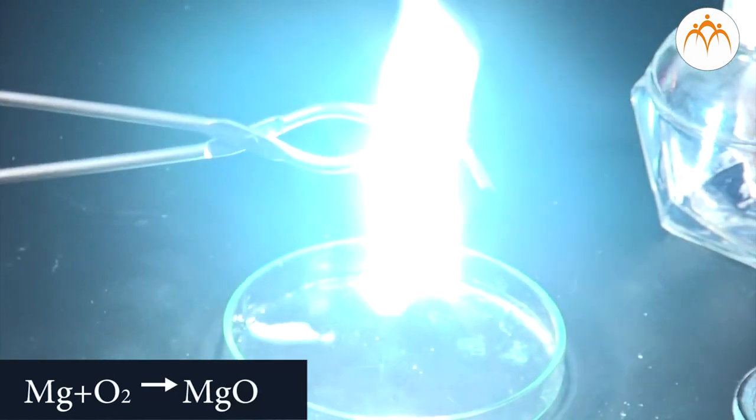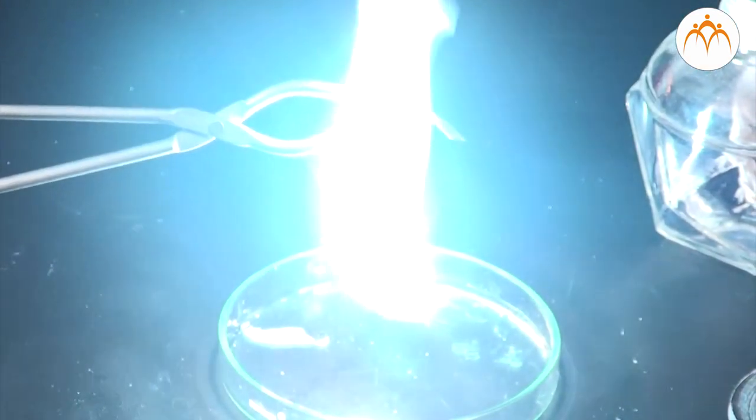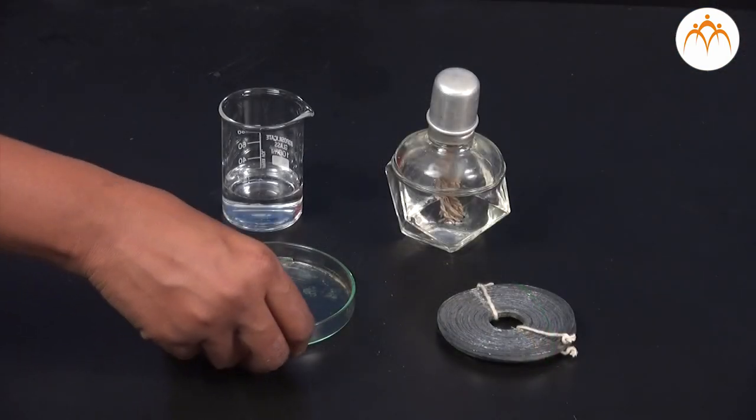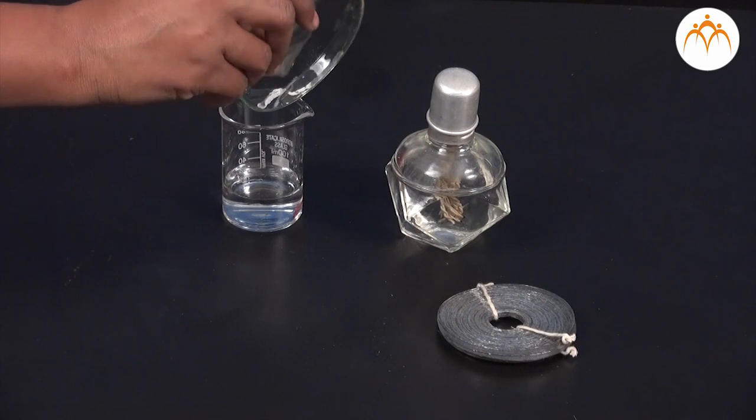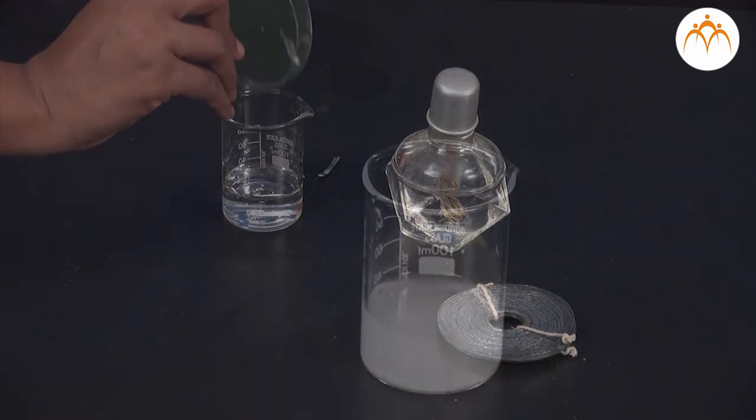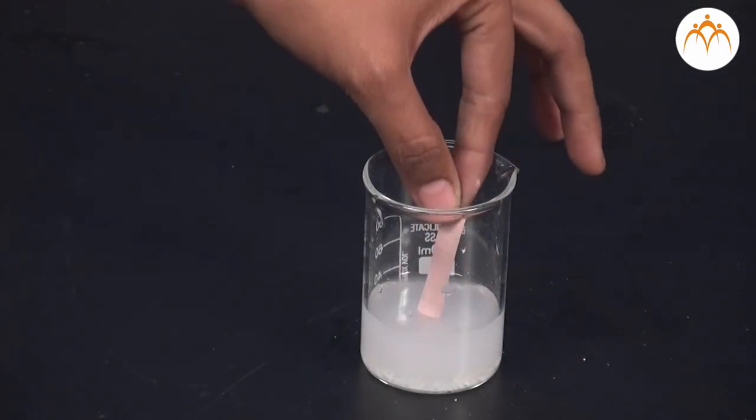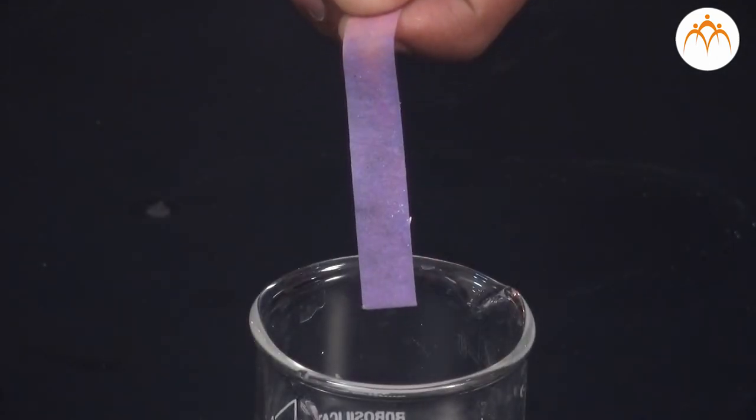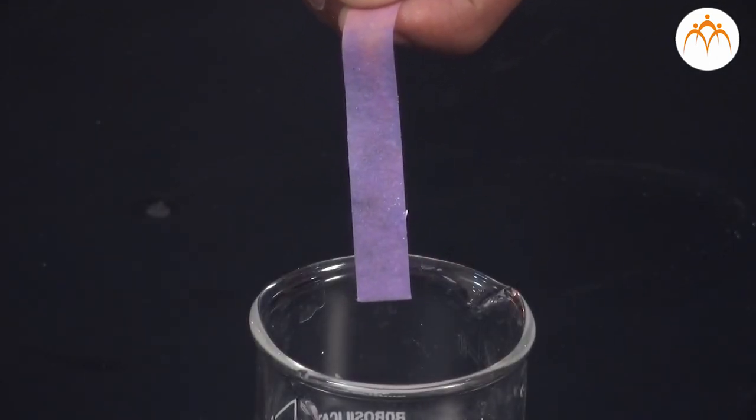Mg plus O2 gives MgO. The ash which is formed is magnesium oxide. After adding water to it, it will dissolve partially in water. If we check this solution with litmus paper, then the red litmus turns blue, which indicates that metal oxides are basic in nature.